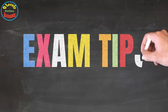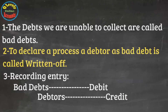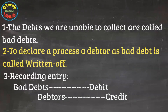Let's discuss the exam tips for the topic. Tip number 1 is the bad debts definition: uncollectable debts are called bad debts. Tip number 2 is when a company declares the debtor as bad, this is called a write-off. Tip number 3 relates to its recording: bad debts are debited and debtors are credited.